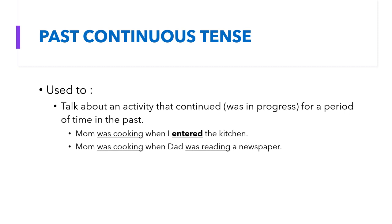Past continuous tense can also be used for activities that were happening at the same time for a period of time in the past. For example, 'mom was cooking when dad was reading a newspaper' — both situations were happening at the same time in the past.